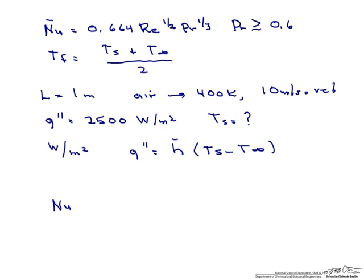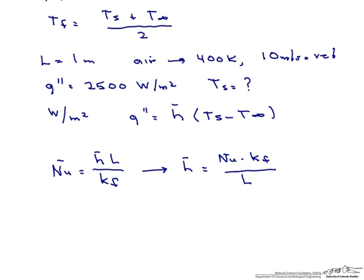If we use this Nusselt number correlation, this equals our H bar times our length divided by the thermal conductivity of the fluid. Therefore, we can solve for our H bar, or our heat transfer coefficient, using the Nusselt number times the thermal conductivity of the fluid divided by the length of the plate. The first thing that we're going to need to do is guess a surface temperature of the plate so that we can look up our properties.